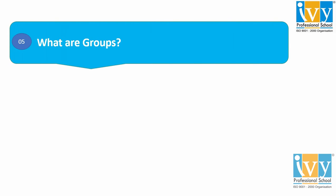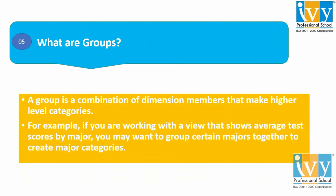Question number five: what are groups? A group is basically a combination of dimension members that make for higher-level categories. We combine related members in a field. For example, if you are working with a view that shows average test scores by major, you may want to group certain majors together to create major categories. Also, groups are useful in correcting data errors.